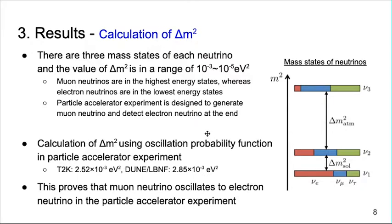Since the particle accelerator experiment is designed to generate muon neutrinos and detect electron neutrinos, approximately 10^-3 eV² of delta m squared should be calculated.